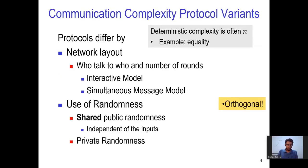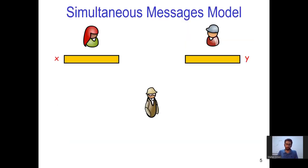The central properties of communication complexity models are the network layout — whether the participants communicate directly or with a third party — and whether there exists a common random source. We are not considering deterministic protocols here. In this short introduction, we will focus on the simultaneous messages model.